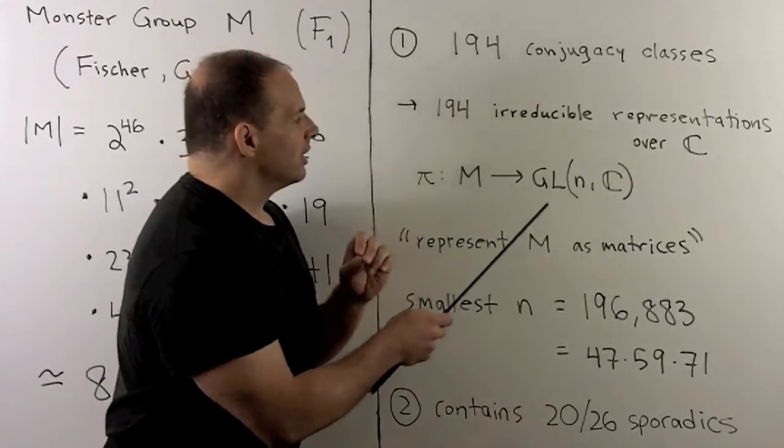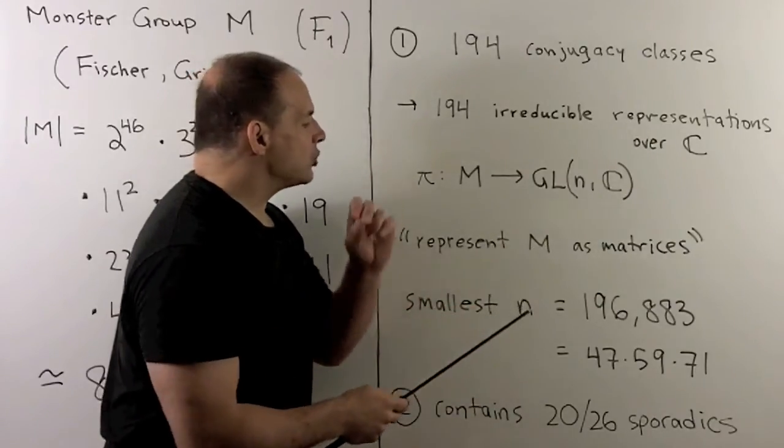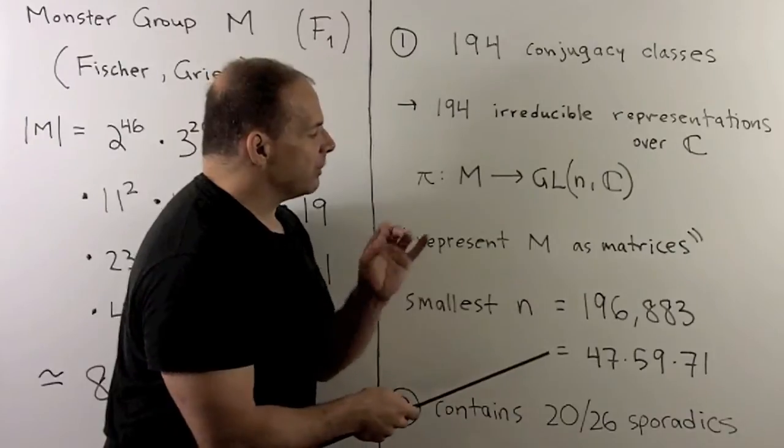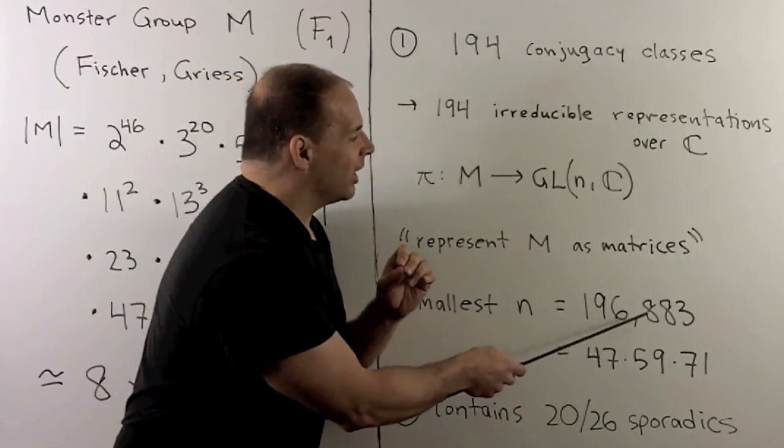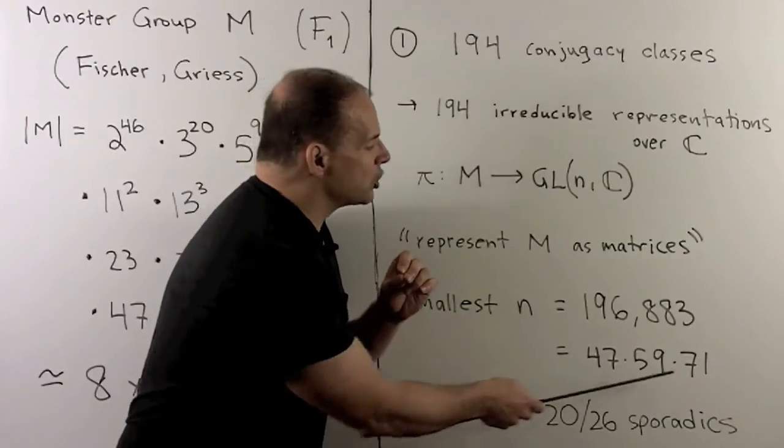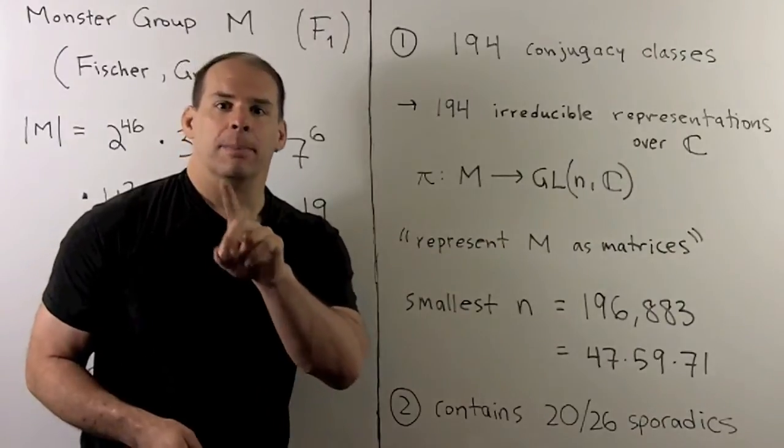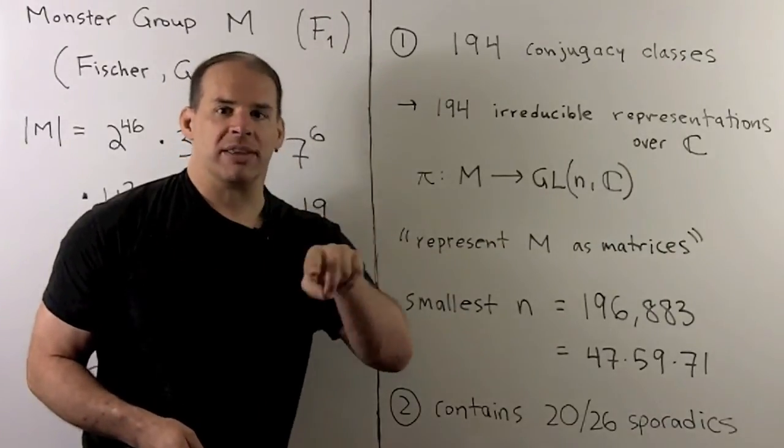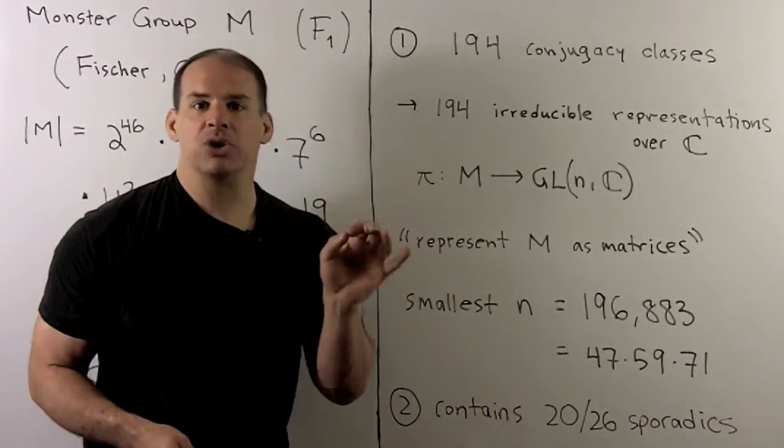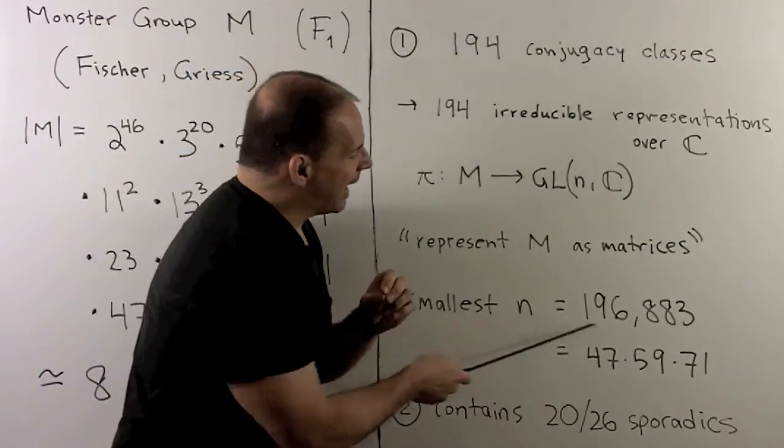Now, it's of interest to get this n as small as possible. So for the monster group, the smallest n is going to be 196,883, which is just the product of the three largest prime factors of the order. So that says the best way we can represent the monster if we use matrices is if those matrices are this n by n.